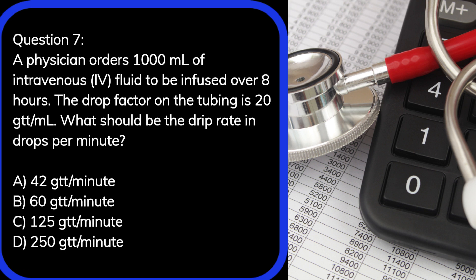Question 7. A physician orders 1,000 milliliters of intravenous (IV) fluid to be infused over 8 hours. The drop factor on the tubing is 20 gtt per milliliter. What should be the drip rate in drops per minute?